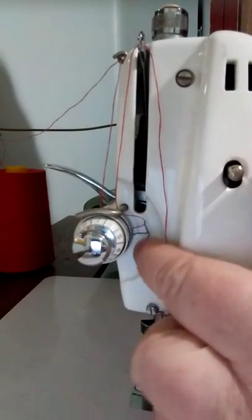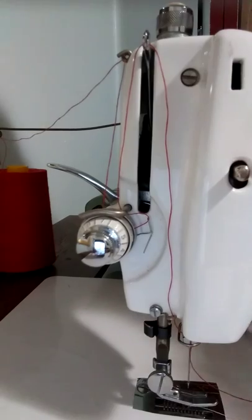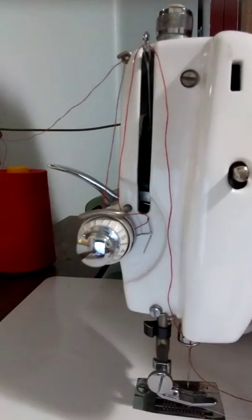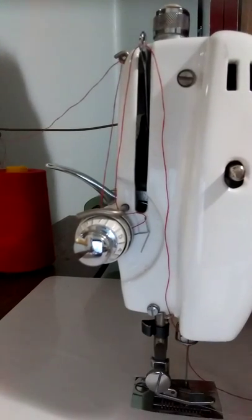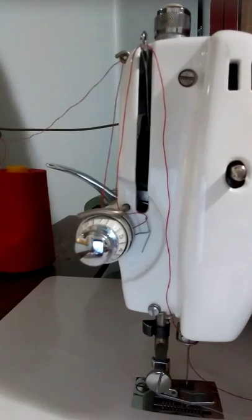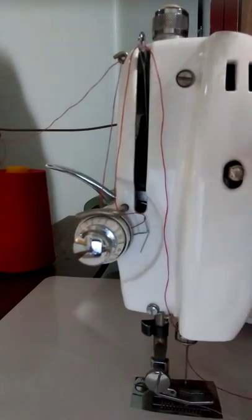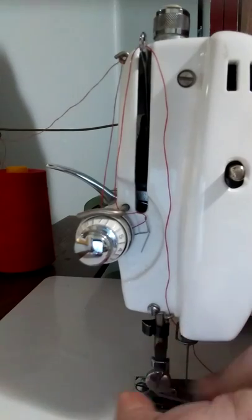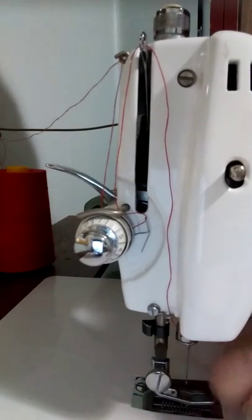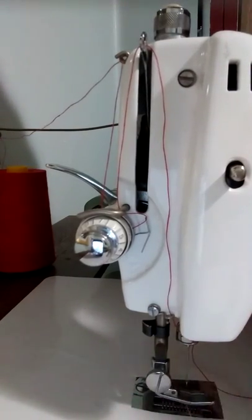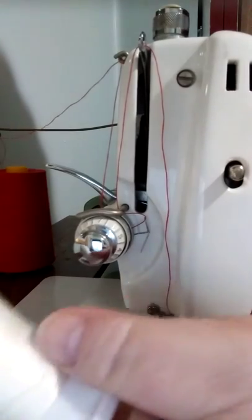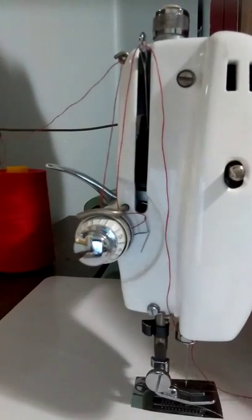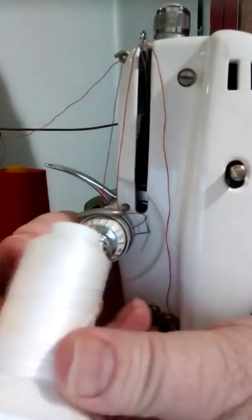One of the great things about this machine, you can use any thickness of threads. I use heavy cotton to do through my quilts and I also use Sulky. I also use this 50 weight. But see how these are wound crisscross again.